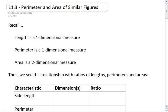Let's do a quick review here. We know that length is a one-dimensional measure. Perimeter is also a one-dimensional measure, however, area is a two-dimensional measure.